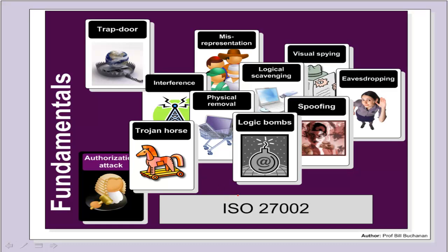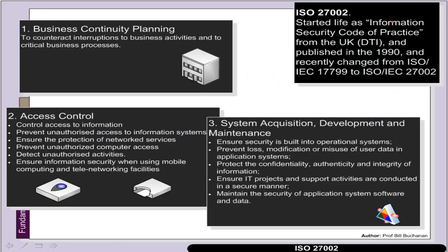One of the most important standards related to security is ISO 27002. It came from the information security code of practice from the DTI in the UK, published as long ago as 1990 and recently standardised as ISO 27002. It lists 11 main clauses which should be seen as good practice within an organisation.